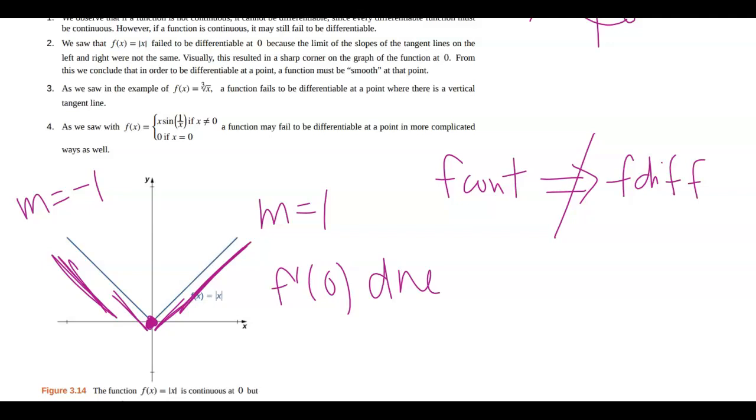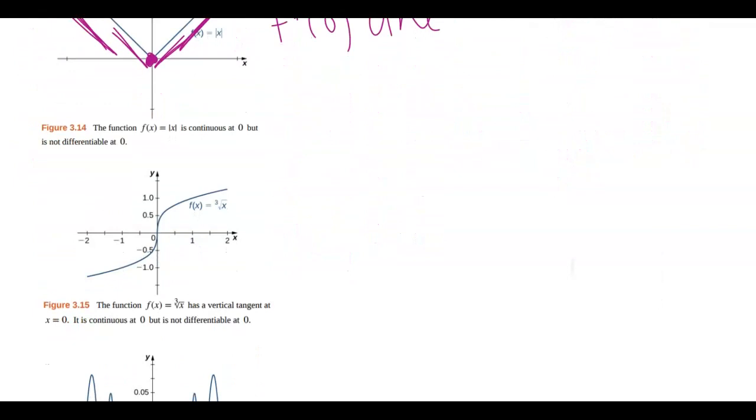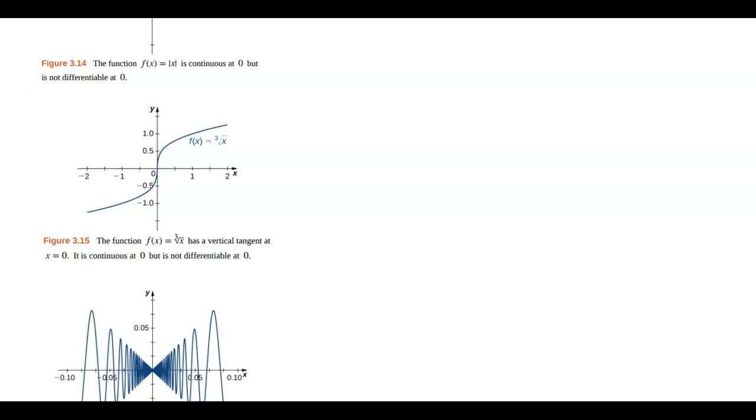You have to check a couple things here. Another example is the cube root function. So on the cube root function, you end up having a vertical tangent line here where the slope is undefined. Well, if the slope is undefined, f prime, again, here is just 0 because of where it is, but f prime of 0 does not exist. So again, the function can be continuous but not differentiable.